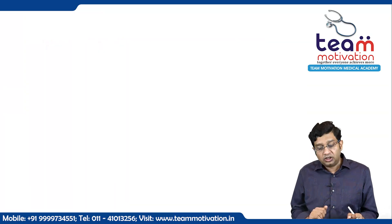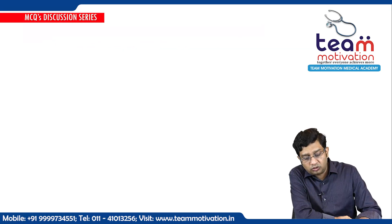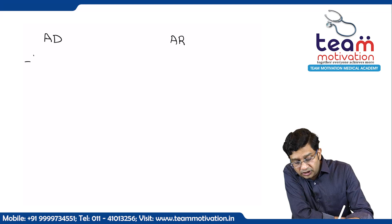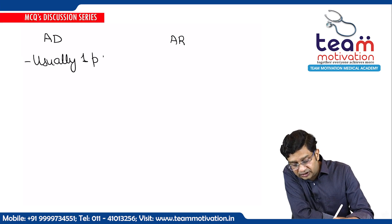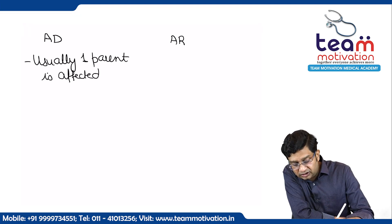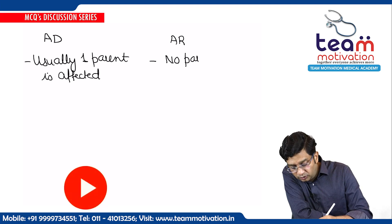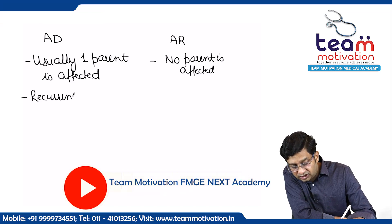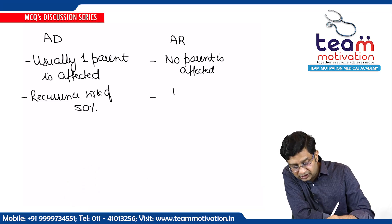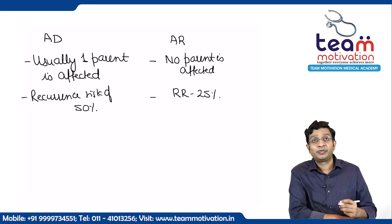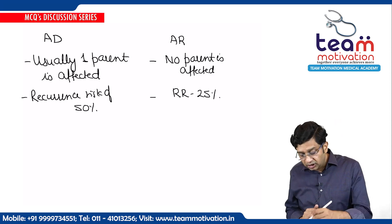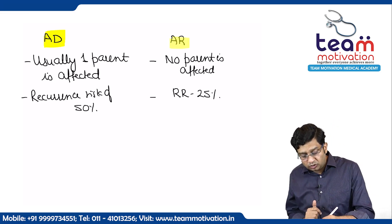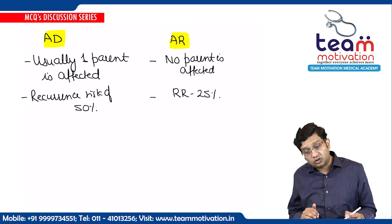Pseudo-dominant inheritance is seen in the next question. Before discussing it, remember: in autosomal dominant, usually one parent is affected; in autosomal recessive, usually no parent is affected. In autosomal dominant, recurrence risk is 50%; in autosomal recessive, recurrence risk is 25%. These are the basic differences you should know.